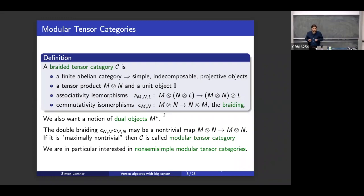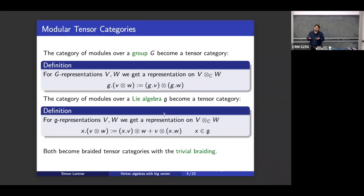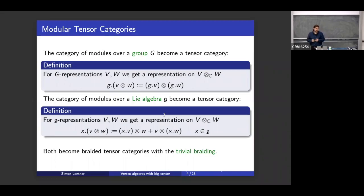We want cases where the braiding is maximally non-trivial: there is no object that has a trivial double braiding with all other objects — this is what we call a modular tensor category. I'm very interested in non-semi-simple modular tensor categories. Instead of summing over simple objects, you have to use a coend — something I was exposed to very much in Hamburg with Christoph Schweigert. The easiest examples are representations of a group or modules of a Lie algebra, where you can tensor and the braiding is symmetric, so you take the trivial braiding — but that's a braiding where the double braiding is trivial, maybe not the kind of example we want.